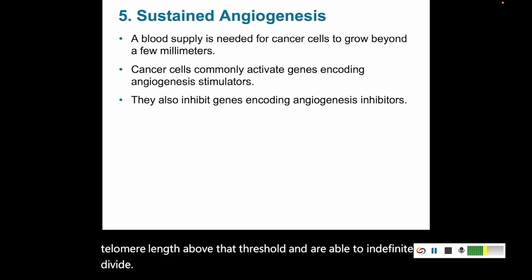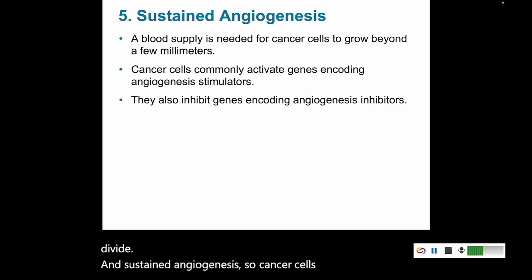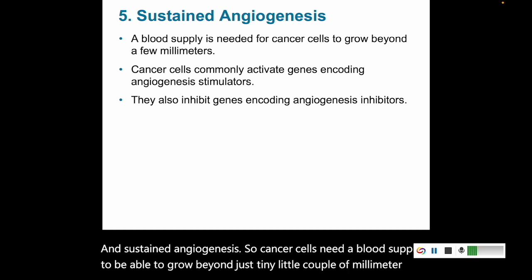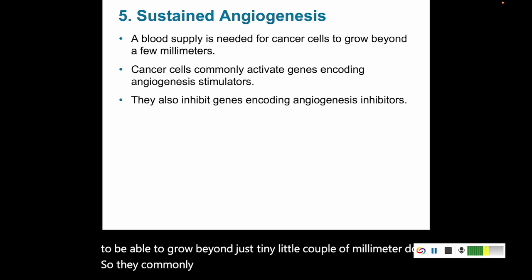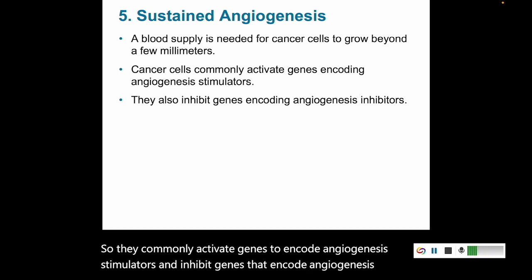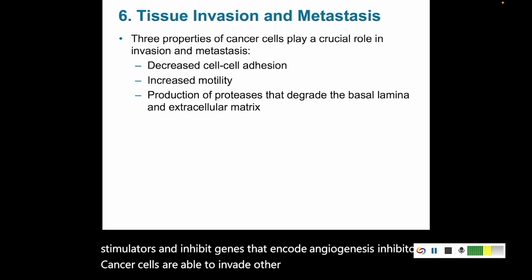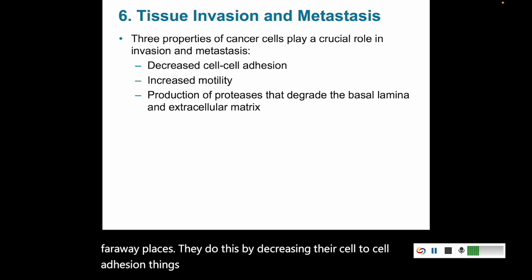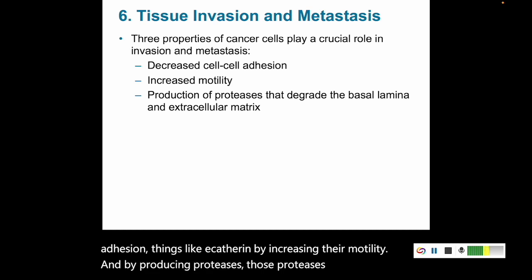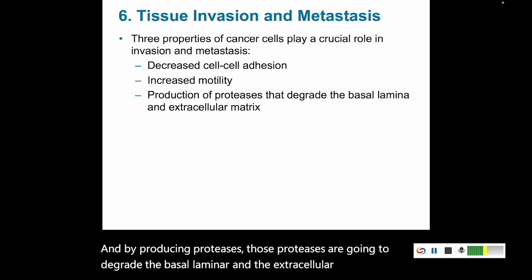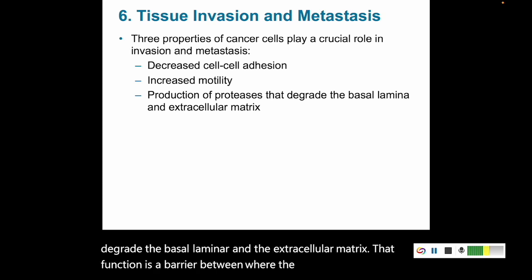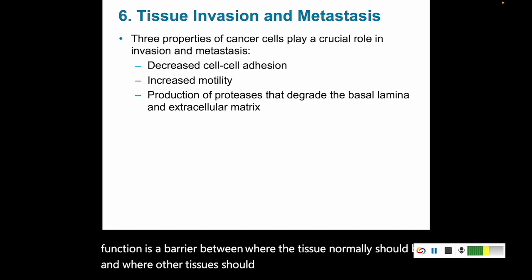Sustained angiogenesis: cancer cells need a blood supply to grow beyond just tiny millimeter-sized dots. They commonly activate genes that encode angiogenesis stimulators and inhibit genes that encode angiogenesis inhibitors. Cancer cells are also able to invade other tissues and metastasize to faraway places. They do this by decreasing cell-to-cell adhesion — things like E-cadherin — by increasing their motility, and by producing proteases that degrade the basal lamina and extracellular matrix, which normally acts as a barrier between tissues, allowing them to invade right into those areas.